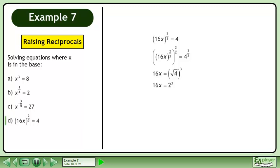The square root of 4 is 2. 2 cubed equals 8. Divide both sides by 16. Reduce the fraction to get the answer: x equals 1 half.